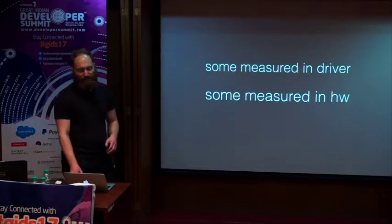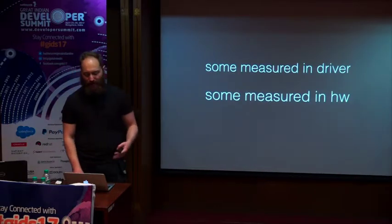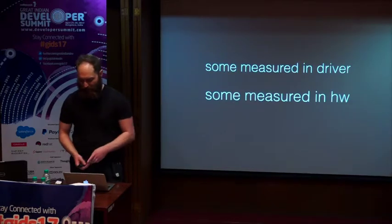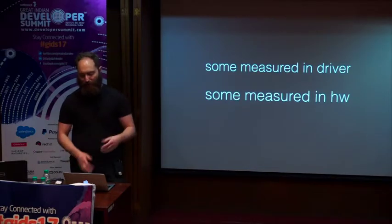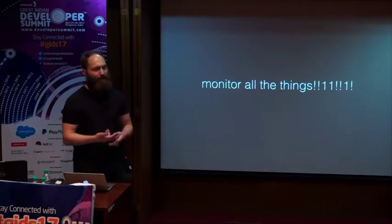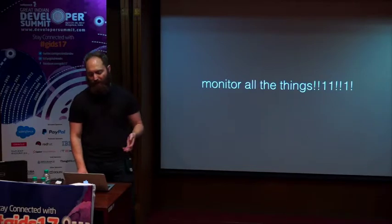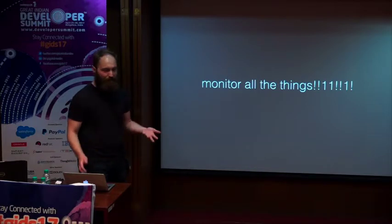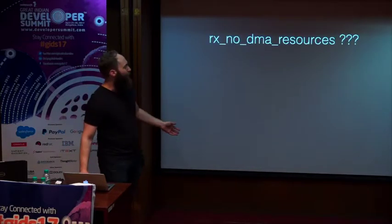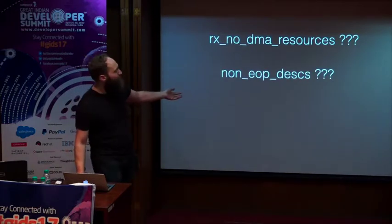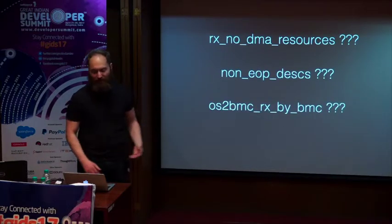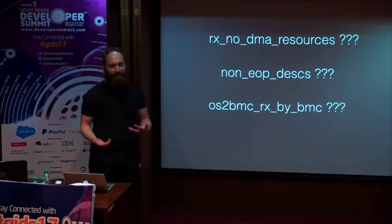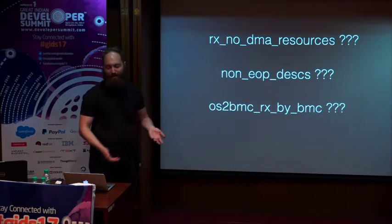Some statistics are measured in the driver, some in hardware. This brings me to something I hear a lot: 'monitor all the things.' I think monitoring everything is a terrible idea because you end up monitoring things you just don't understand. Here are a few statistics you'll get from ETH tool that don't make any sense: 'Rx no DMA resources' — what does that mean? 'Non-EOP desks' — what does that mean? 'OS to BMC Rx by BMC' — what is this? If you monitor all these things, you're storing and graphing data that doesn't make any sense to a human being.